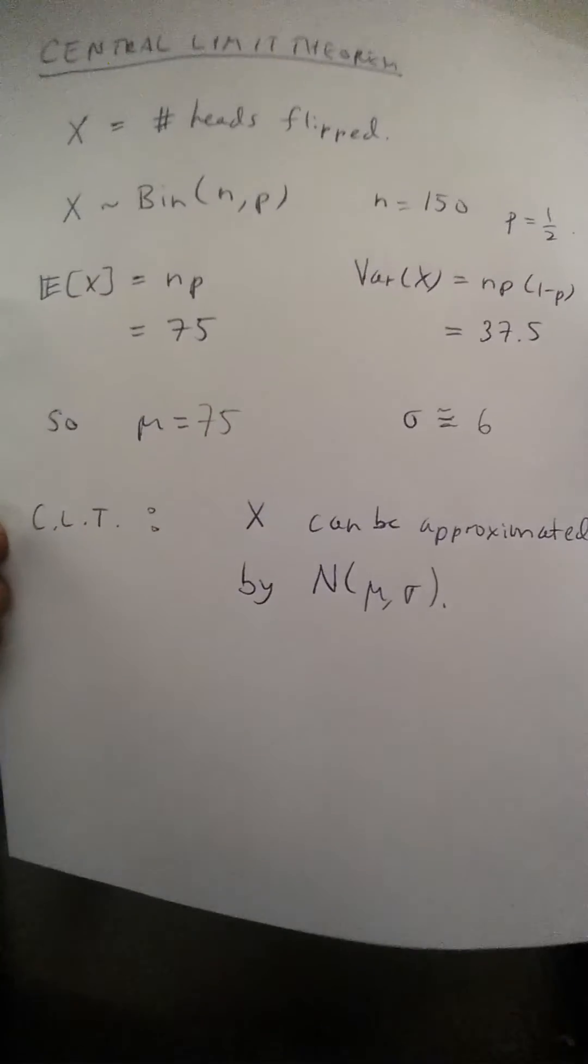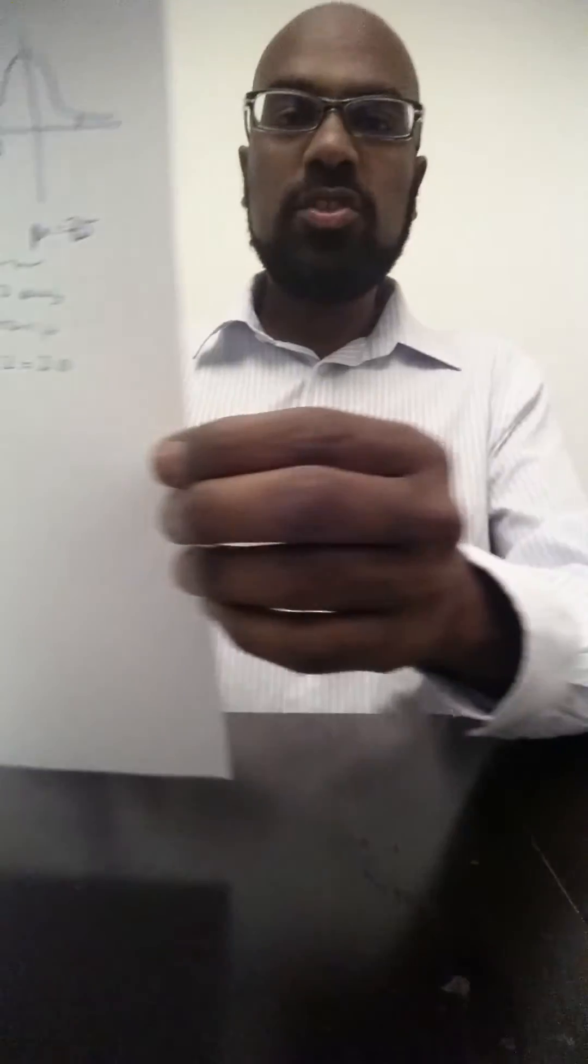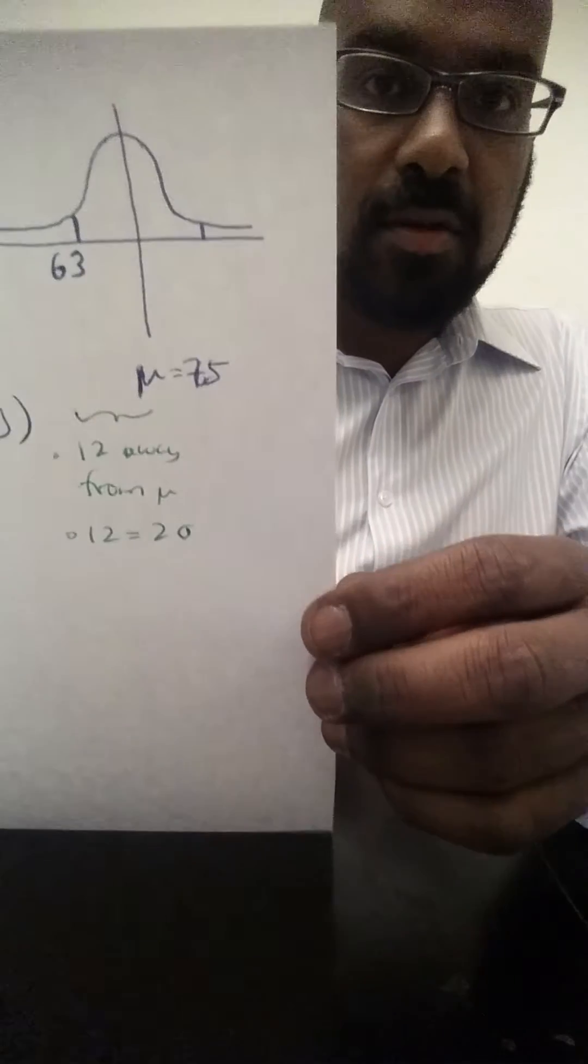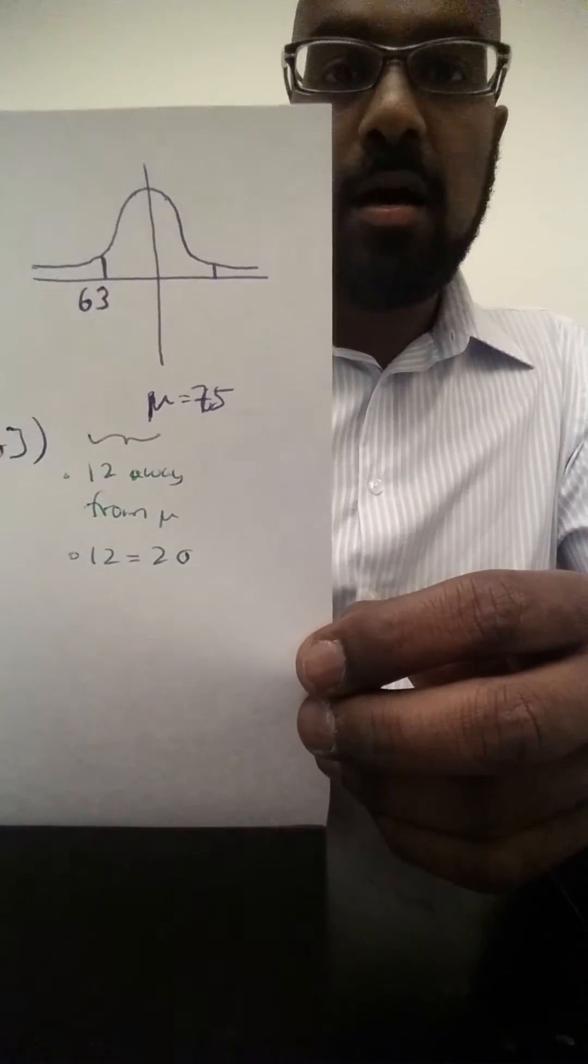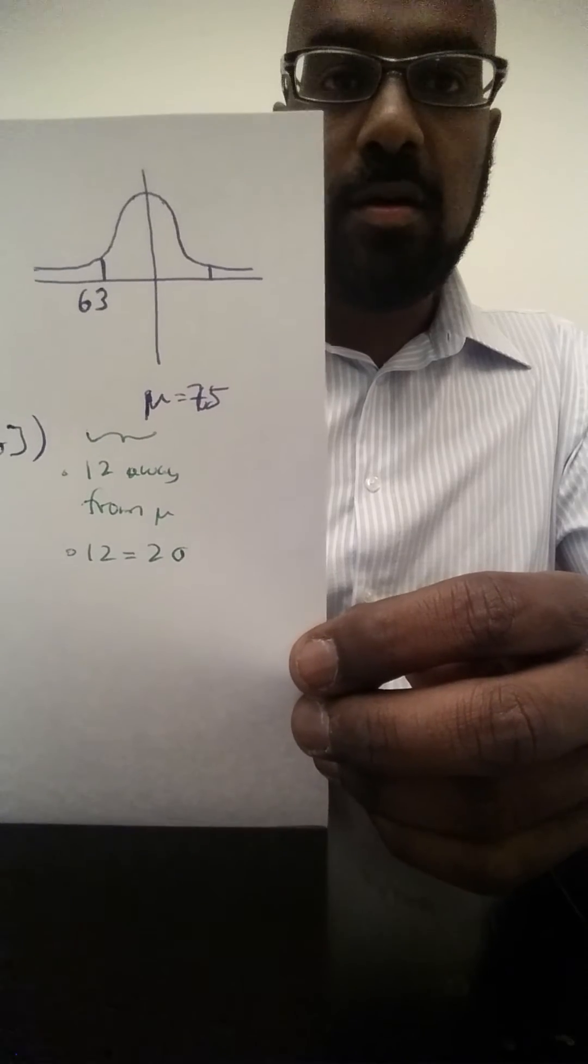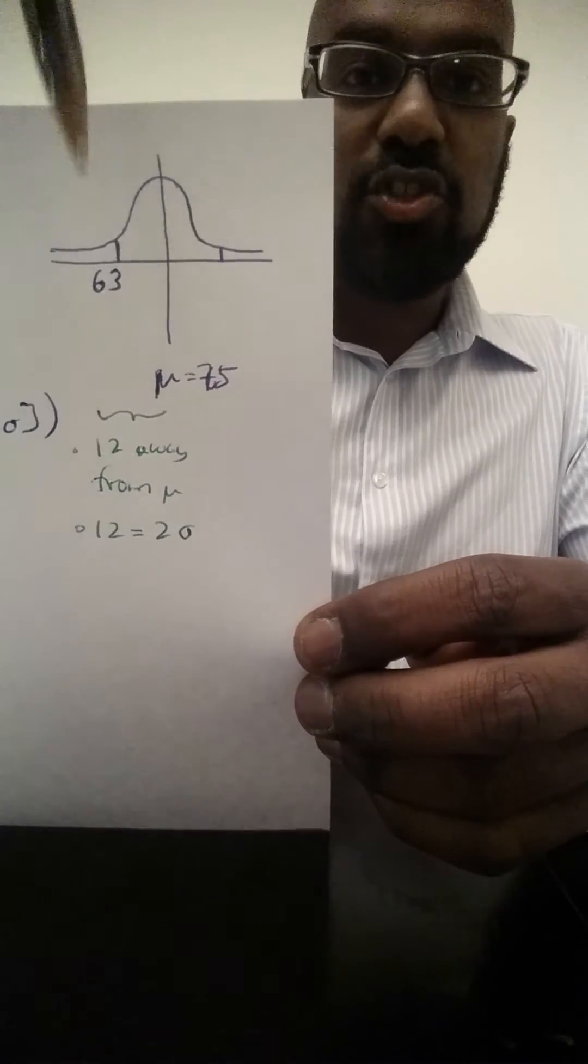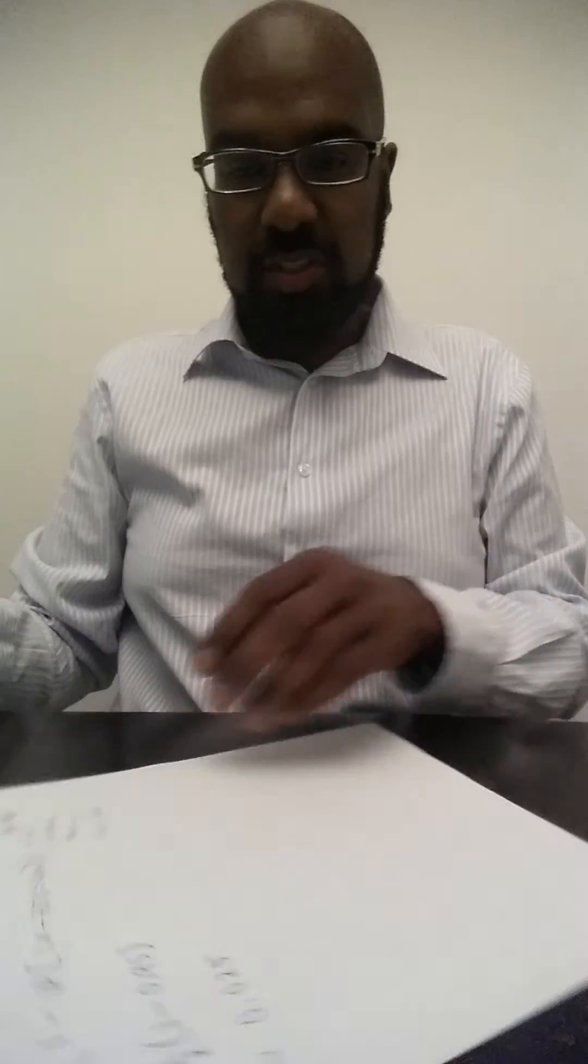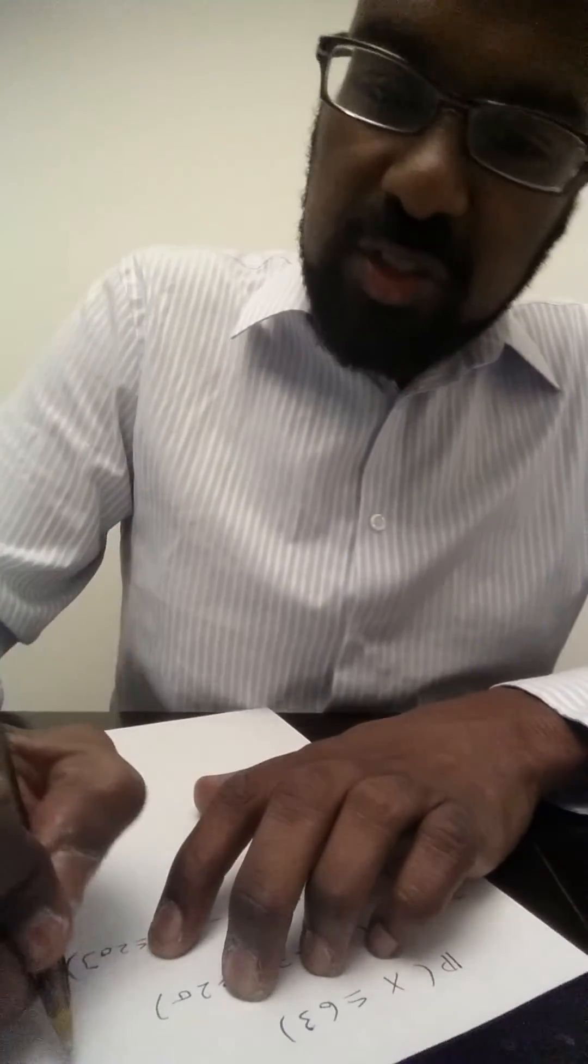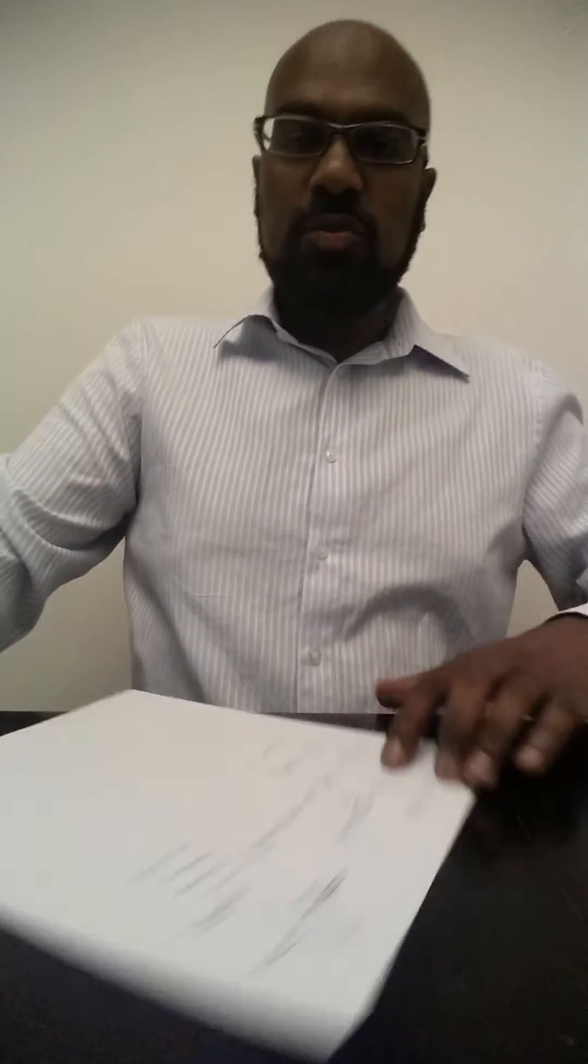So let's go ahead and use the central limit theorem to approach our problem then. We're interested in the probability that we have at most 63 heads, and if you look at this picture, now we have this normal distribution approximating what we're interested in, and so the region we're interested in calculating the probability of is this region right here shaded in green.